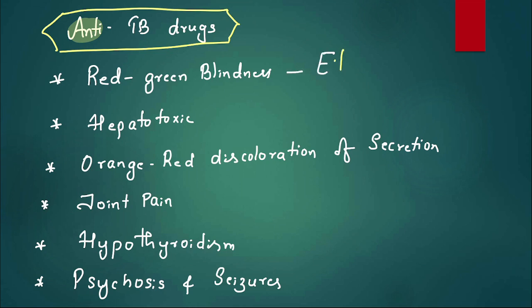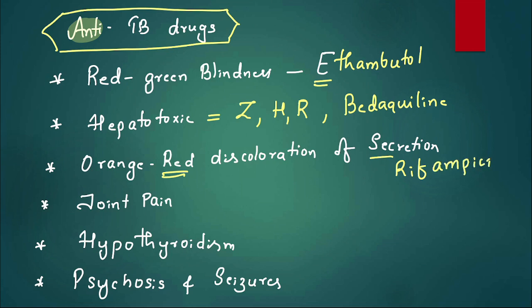Coming to some special points about anti-TB drugs. Guess that drug which causes red-green blindness? Yes, remember the name is ethambutol - I for eye problems. Coming to hepatotoxicity, HRZE - all are hepatotoxic. The maximum is pyrazinamide Z, then isoniazid, then rifampicin. Nowadays, even bedaquiline is hepatotoxic when we use it in tuberculosis. Orange-red discoloration of secretions - remember red for the drug rifampicin. Joint pain - why joint pain? Due to increase in uric acid. Remember pain for pyrazinamide.